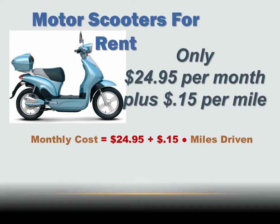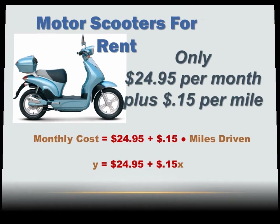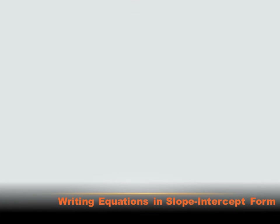This is algebra, so instead of big words like 'miles driven' and 'monthly cost,' let's replace those with variables. Monthly cost, or Y, equals $24.95 plus $0.15 times X, which means miles driven. We now have a formula in algebraic notation: Y, the monthly cost, equals $24.95 plus $0.15 per mile.